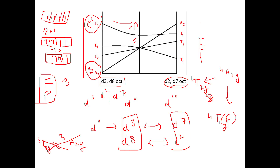Orgel diagrams are applicable to d1, d2, d3, d4, d6, d7, d8, and d9 configurations only. For d5, Tanabe-Sugano diagrams are used instead, which will be covered in the next video along with the Racah parameter. By solving practice questions from NET and GATE exams based on these concepts, you should be able to handle any questions on Orgel diagrams.